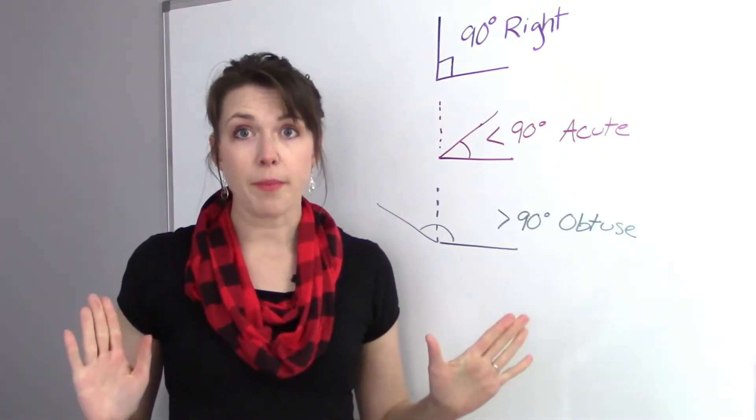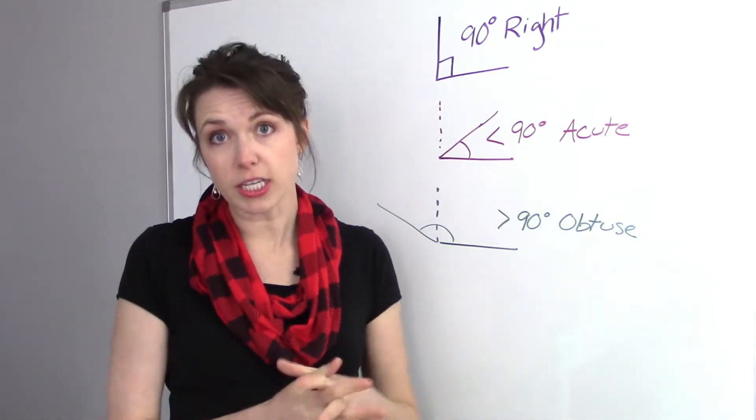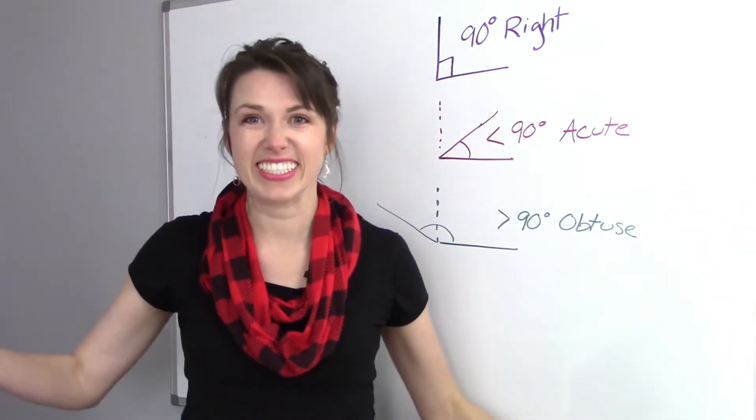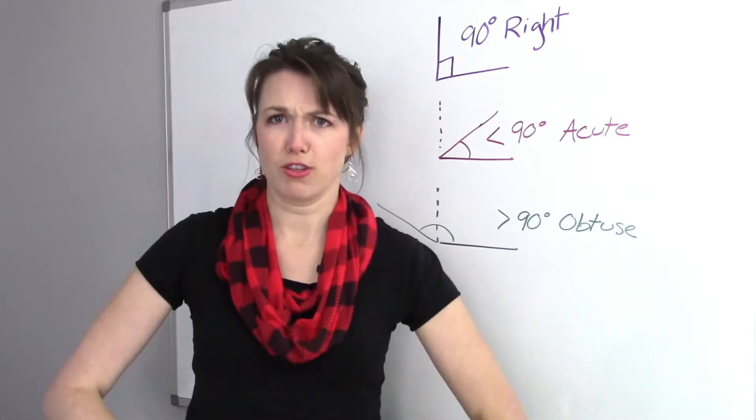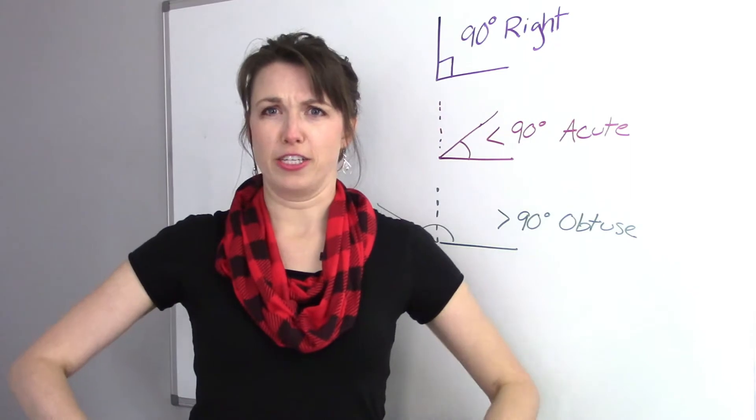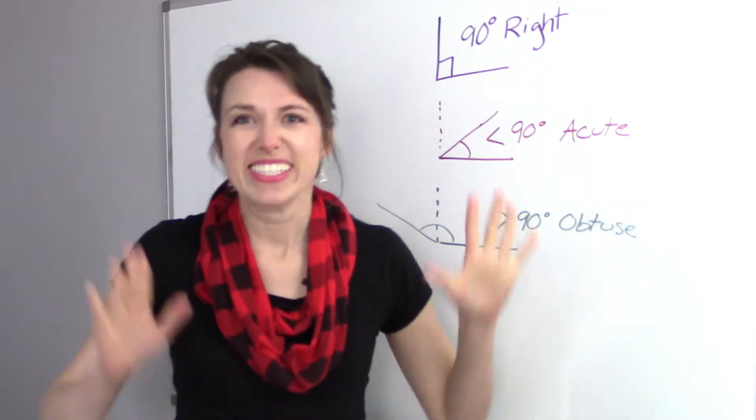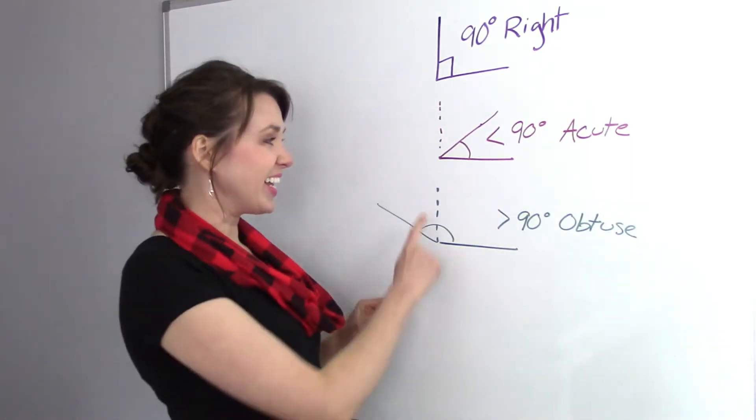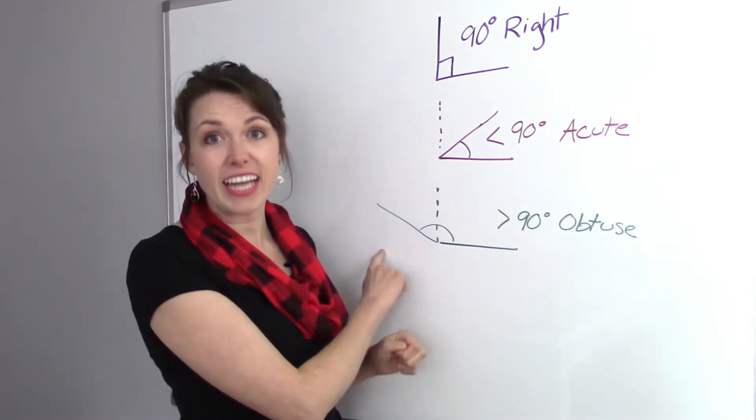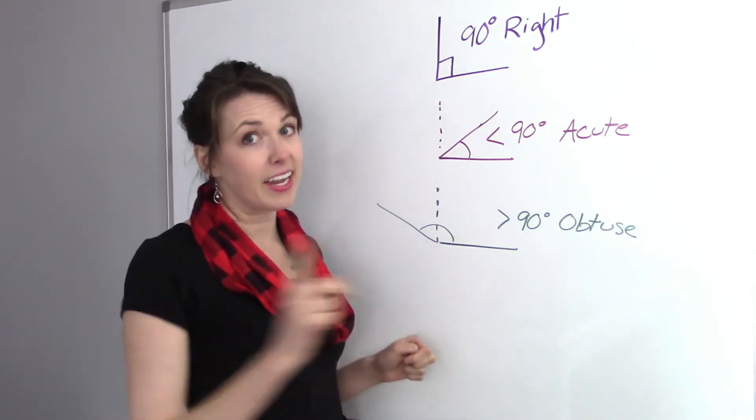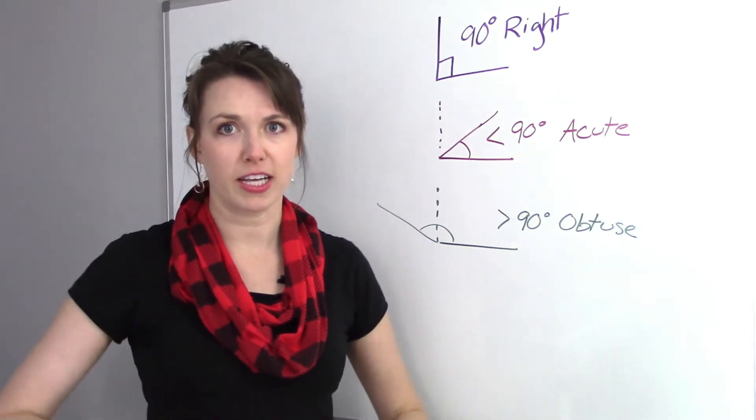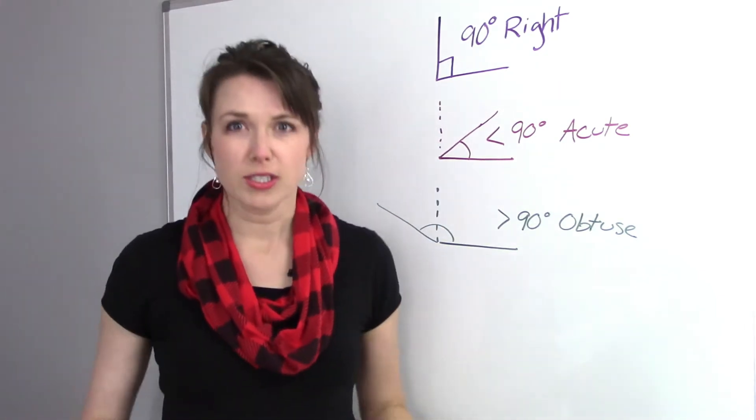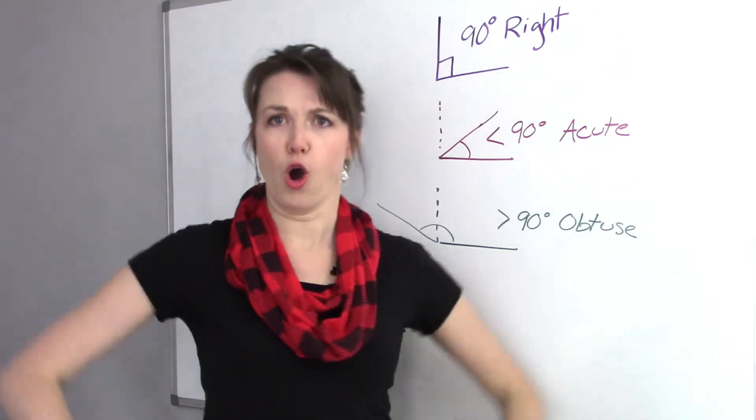Now, what is the opposite of little and cute? Big, right? And so if little and cute talks like this, how does big talk? Get those muscles out. And it's obtuse. So any angle that is bigger than 90 degrees and less than 180 is going to be obtuse. So we say it like this, obtuse. So we have acute and obtuse.